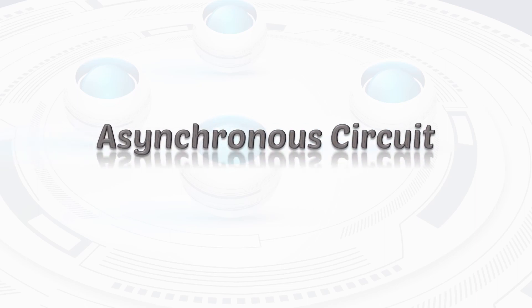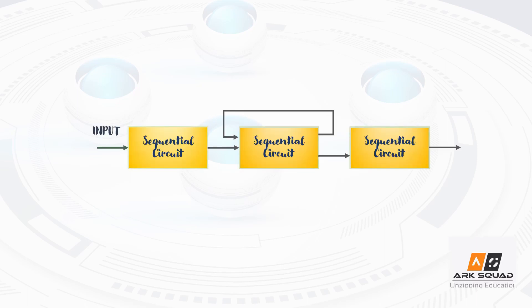Now let's see about asynchronous circuits. In asynchronous circuits, there is no clock signal. Then how does the circuit operate? When there is a change in input signal, the circuit responds and generates output. This seems to be simple, but there is an issue. The circuit may produce an invalid output, and this is called as RACE.